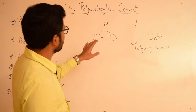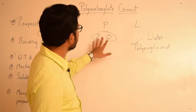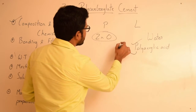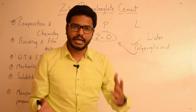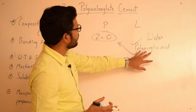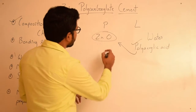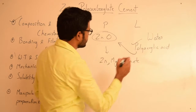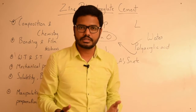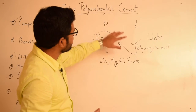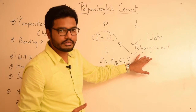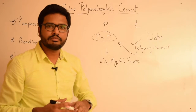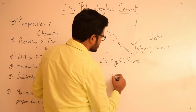Regarding the setting chemistry, since this is an acid-base reaction, we have an acid in the liquid and zinc oxide as the base. When powder and liquid are mixed, the liquid component attacks the powder particles. The acid component attacks the powder particles, leading to release of various cations such as zinc, magnesium, aluminium, and tin into the reaction medium, with water serving as the reaction medium. This process is surface particle dissolution by polyacrylic acid.